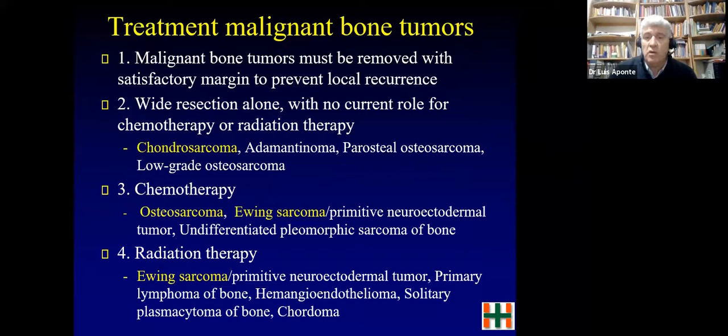There are three different treatment scenarios for bone sarcomas. First, wide resection alone with no chemotherapy or radiotherapy — mainly for chondrosarcoma, because it grows slowly and chemo and radiation do not work. The adamantinoma or low-grade parosteal osteosarcoma also fall here, though these are rare in the upper extremity.